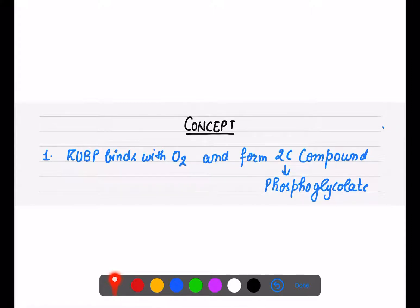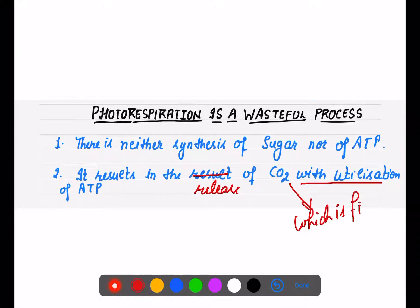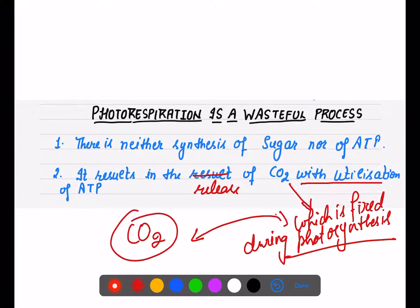Photorespiration is a wasteful process because neither the synthesis of sugar nor the formation of ATP results from it. Instead, it results in the release of CO2 — the same CO2 that was fixed during the photosynthesis process. So this process is releasing exactly what photosynthesis was working to fix, making it harmful for the plant.